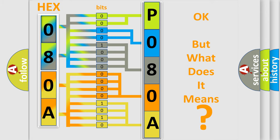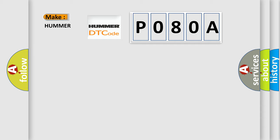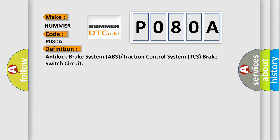So, what does the Diagnostic Trouble Code P080A interpret specifically for car manufacturers? The basic definition is Anti-lock brake system ABS or traction control system TCS brake switch circuit.